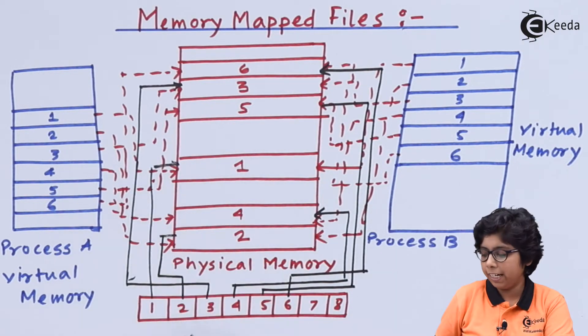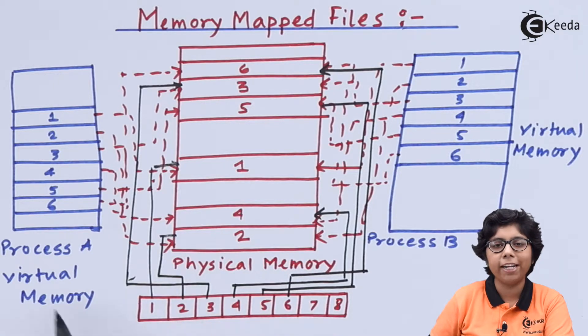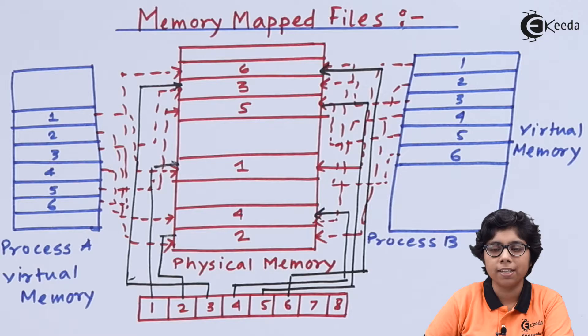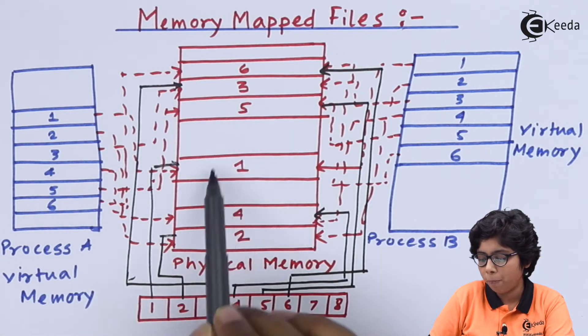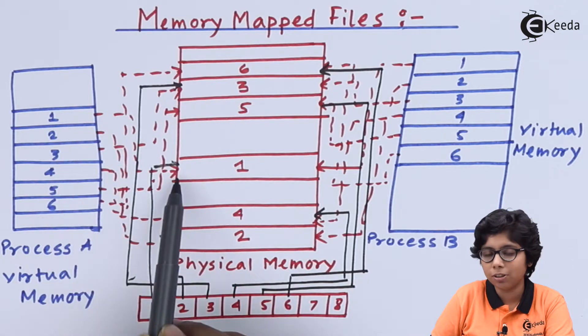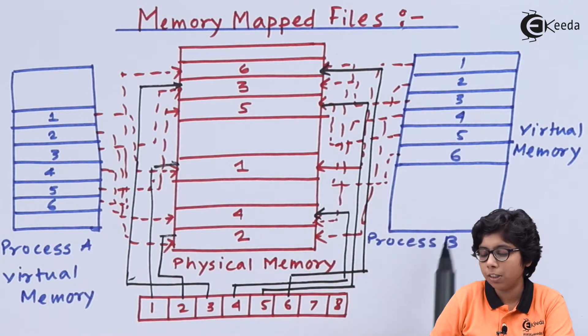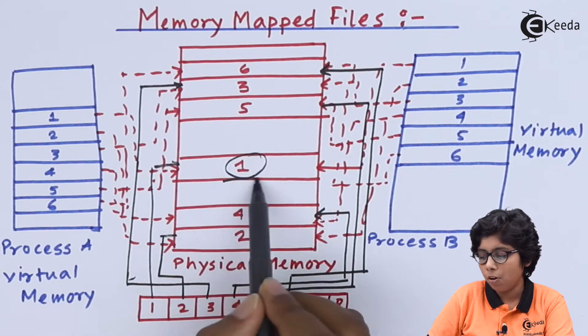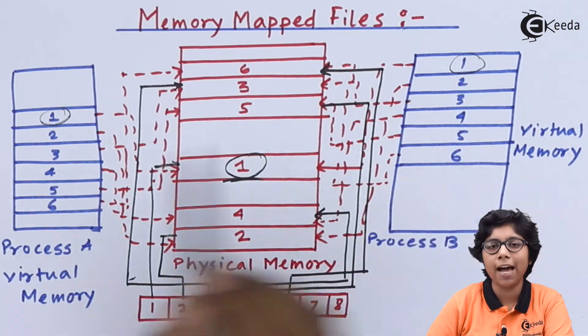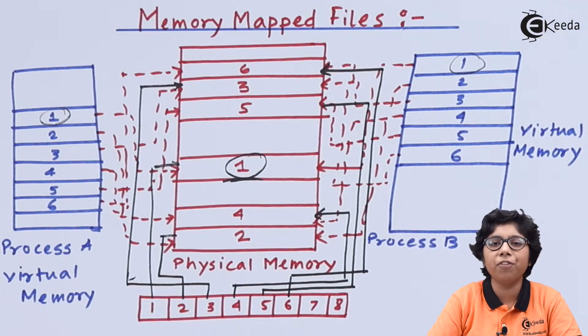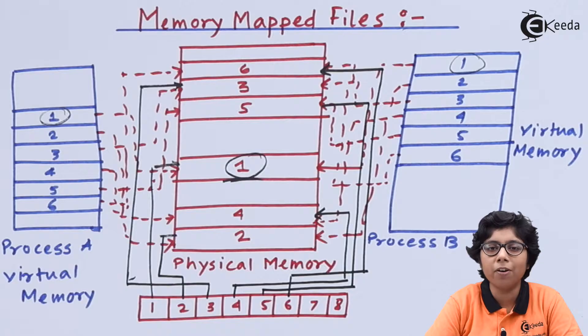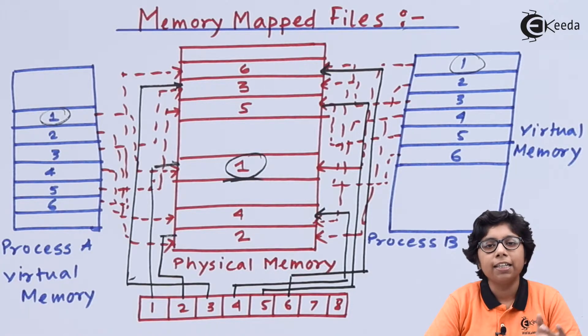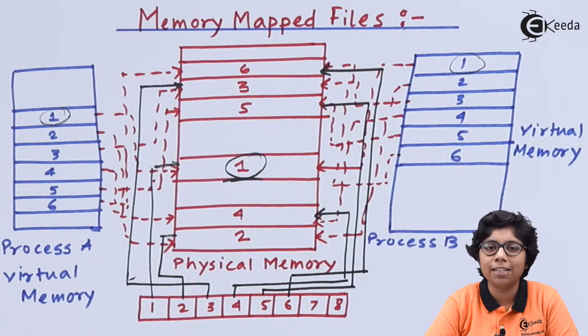Every physical page which is indexed from this page table is pointing to the actual references of these physical pages. When process A is referencing page 1, it is pointing to this page 1, as well as process 1 of process B is referencing this page 1. Both are referencing to the actual physical page whereas the own copy they are residing with is another one. In this type of case, the functionality providing copy on write is accessible.